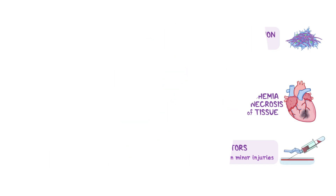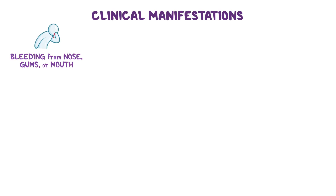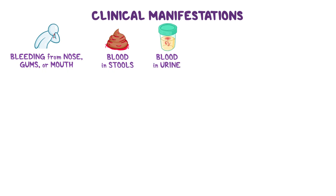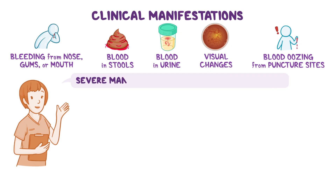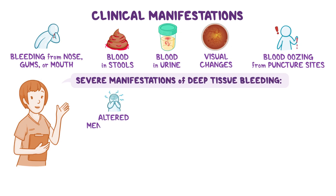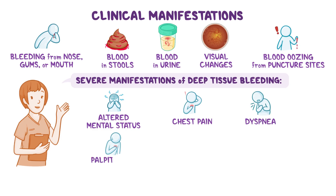The first clinical manifestations of DIC often include undue bleeding from the nose, gums, or mouth, as well as blood in the stools due to gastrointestinal bleeding, blood in the urine due to urinary tract bleeding, visual changes due to retinal hemorrhage, or blood oozing from puncture sites. More severe manifestations of deep tissue bleeding include altered mental status, chest pain, and dyspnea, along with palpitations, tachycardia, and even shock.